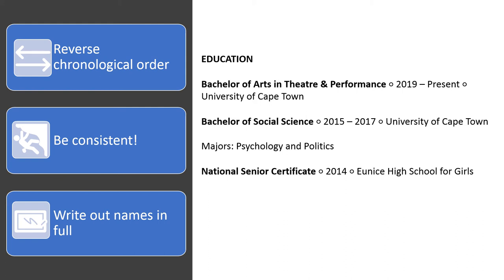For example, if you are doing a Bachelor of Arts in Drama at UCT in 2020, that is what you start with and not your high school details. You can decide where to put dates, either on the right or the left — the key is consistency throughout your CV. State the year you started your degree, for example, 2019 till present. Write your degree and institution in full, like 'Bachelor of Social Sciences in Psychology and Politics, University of Cape Town' — not abbreviations like BSOC, PSY, POLL and PSYC at UCT.